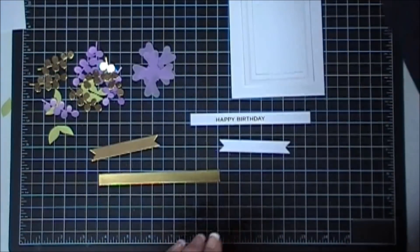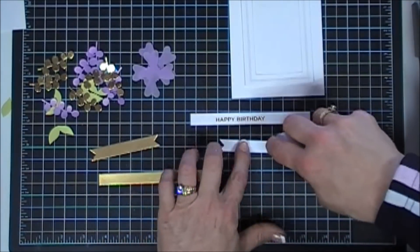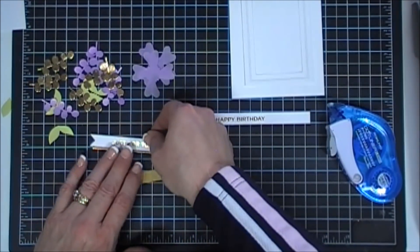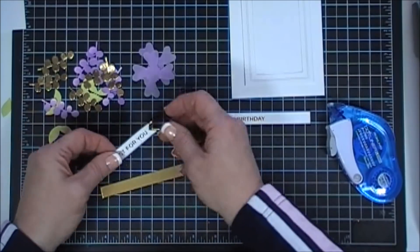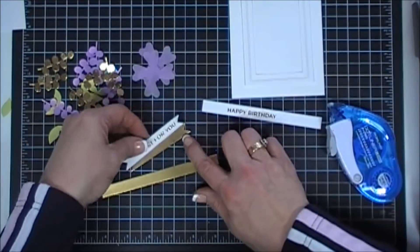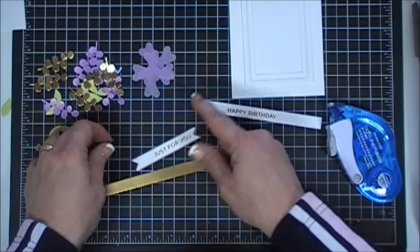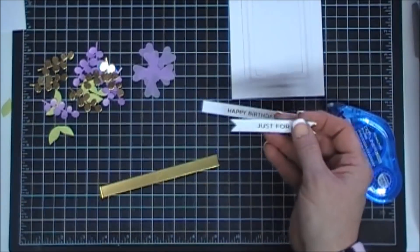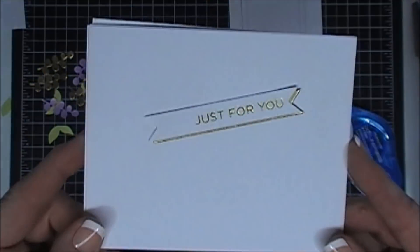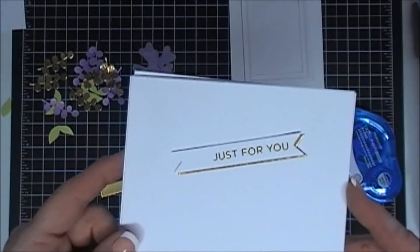Okay, now we'll put that aside. Earlier when I showed you the banner strips, I cut them out with gold, so I thought we'd put those to good use. I'm going to actually offset them with my sentiment, just a little bit.